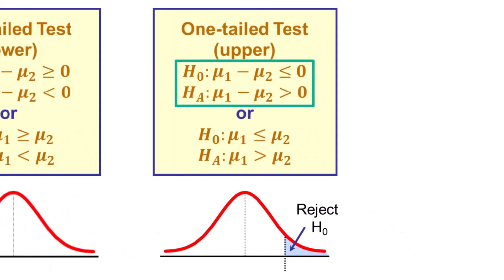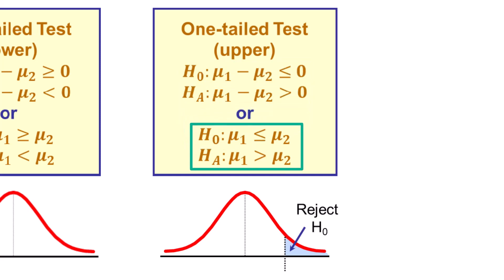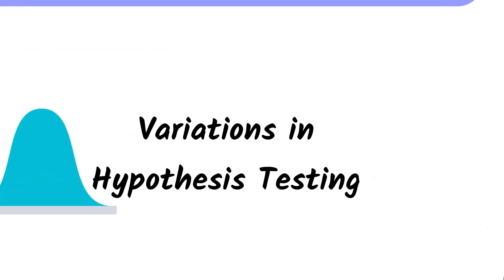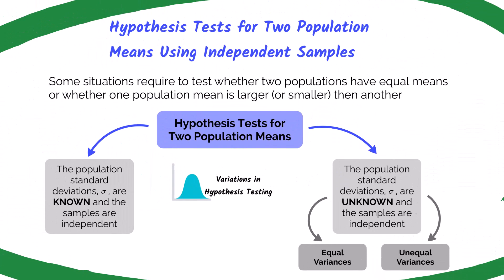For the upper-tailed test, when we take population mean one and subtract it by population mean two, the difference is greater than zero, so the difference between the two population means will be a positive number, meaning population mean one is bigger than population mean two. In the second version, the alternative hypothesis states that population mean one is greater than population mean two. Let's work on a practice problem for when the population standard deviation is known.